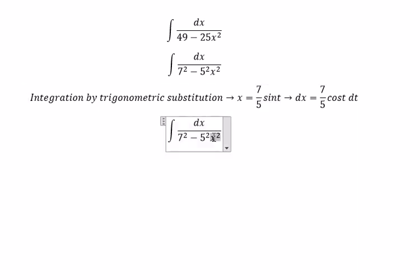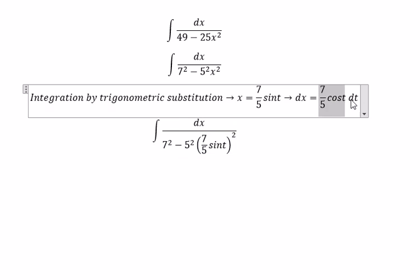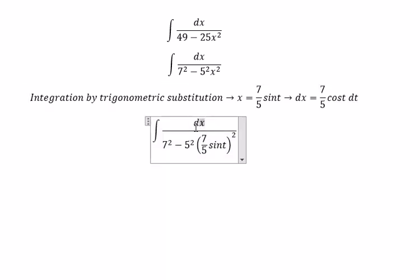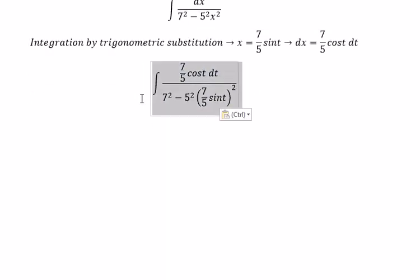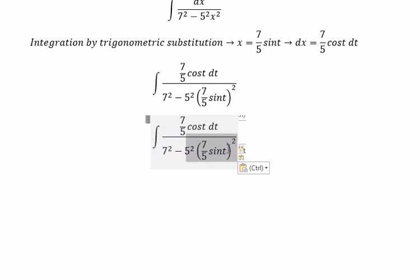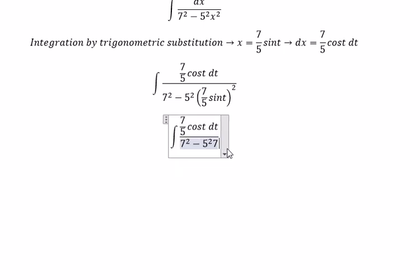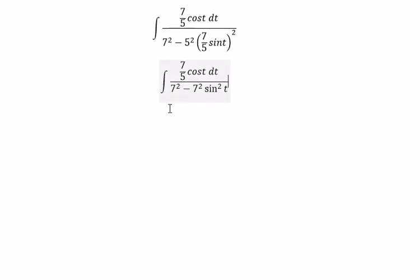So this one we can put about 7²/5² sin² t. This one we can simplify into 7² later, and we put 7² outside and we have 7/5, so we got about 1/35.